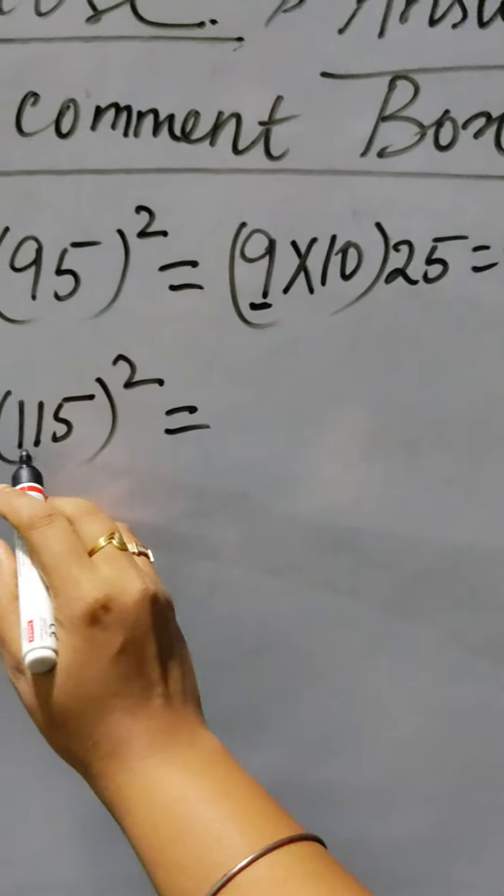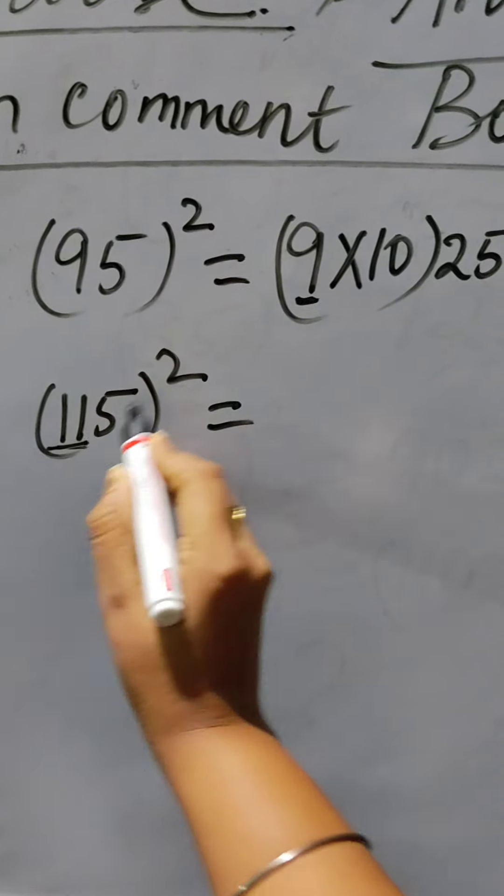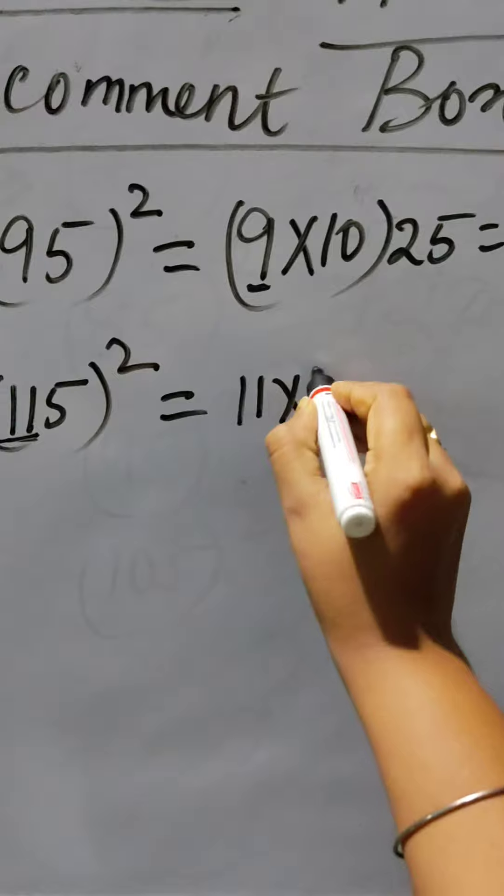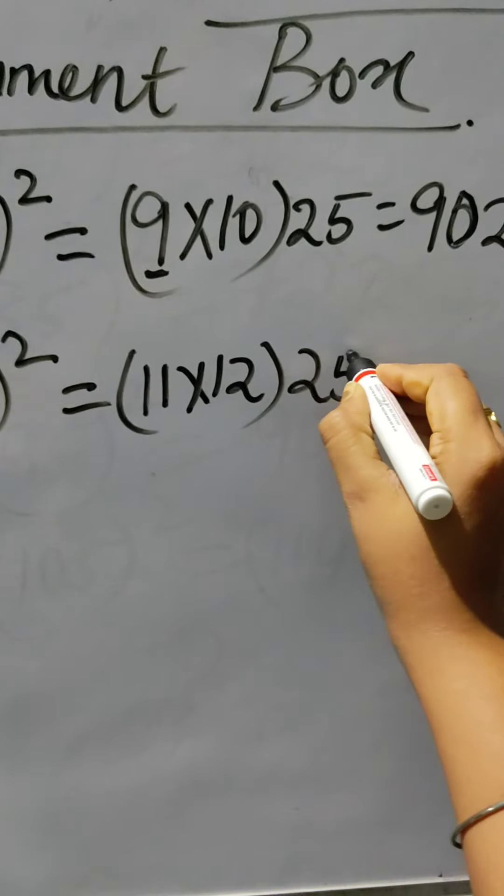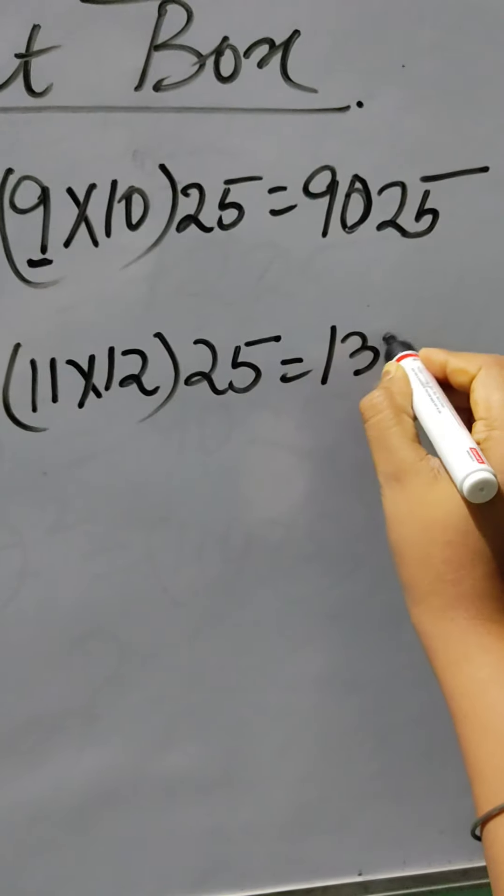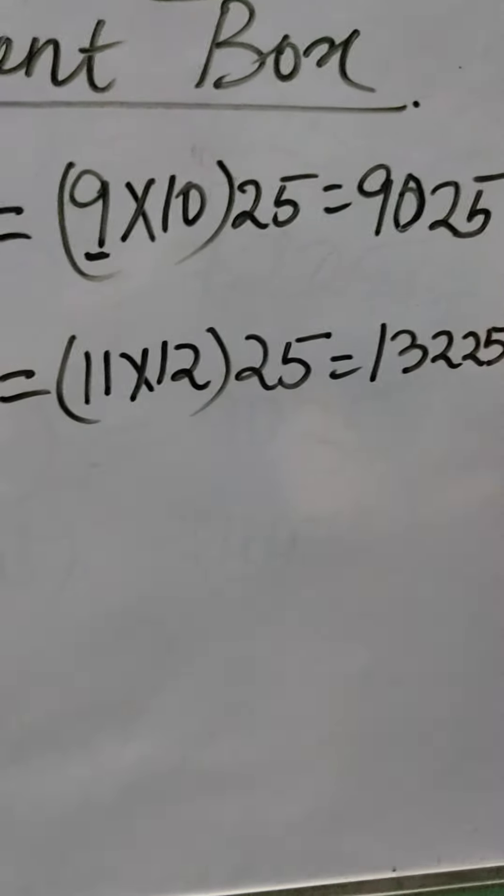For 115 squared, except 5 you can see that 11 is written. So write down 11, and next to 11 comes 12. Then 5 squared is 25, and the answer is 13225.